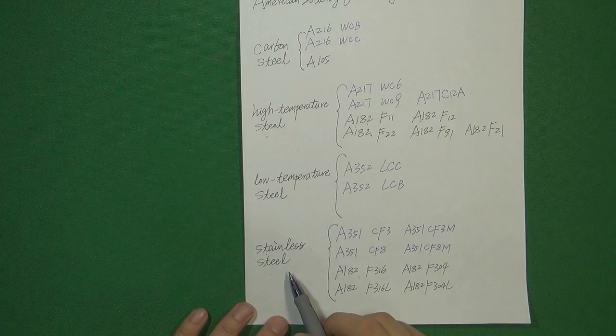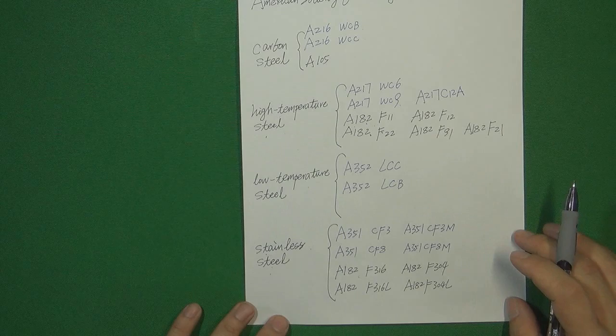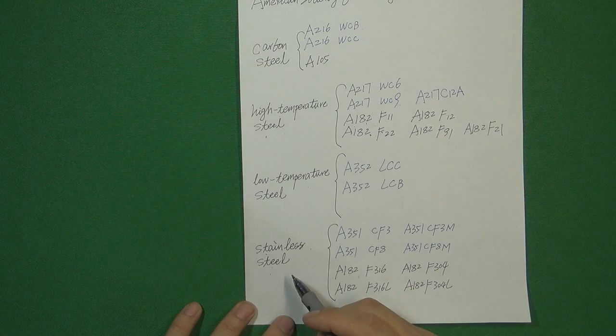Stainless steel is very important in the valve industry because if a valve is made of stainless steel, this valve will never get corrosion, never get rust. So these materials are very important for the valve industry, especially for corrosion medium flow control systems. So why does this kind of material have that property? We need to look at what chemical elements are inside this material, so we can find the answer.